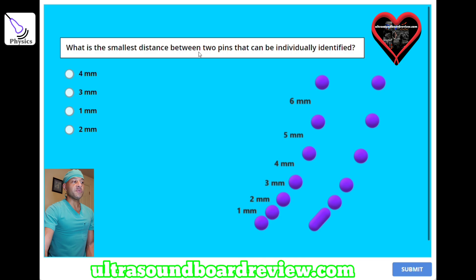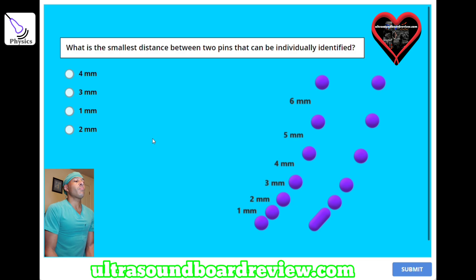What is the smallest distance between two pins that can be individually identified? A, 4 millimeters; B, 3 millimeters; C, 1 millimeter; or D, 2 millimeters. The answer is D, 2 millimeters.